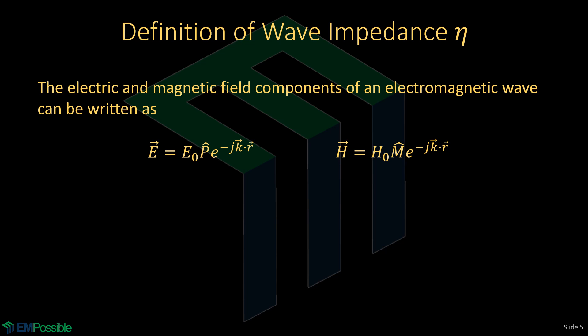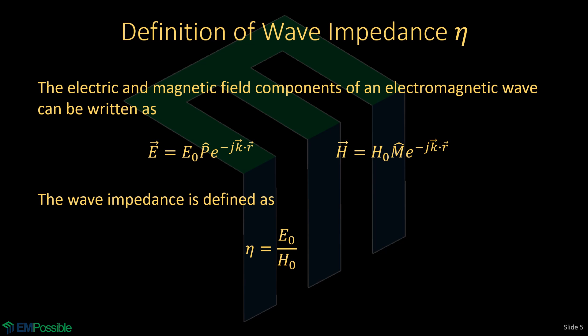Let's look at the definition of wave impedance from a mathematical perspective. We'll start with the expression of the electric field component of an electromagnetic wave. There's also a magnetic field component — it has the same exact form. The difference is it can have a different complex amplitude (that's magnitude and phase), and it's also a different direction than the electric field. The electric field, the magnetic field, and the direction of the wave K are all perpendicular to each other. We define wave impedance as the ratio of the complex amplitude of the electric field to the complex amplitude of the magnetic field.